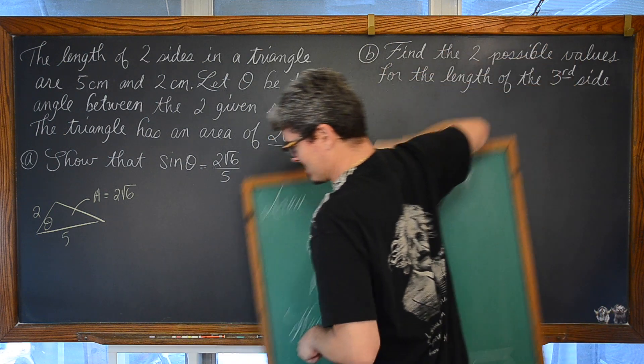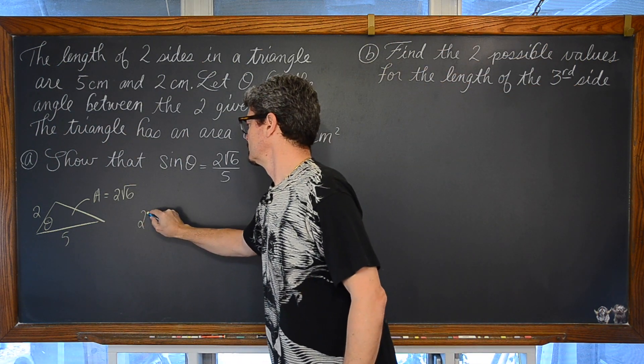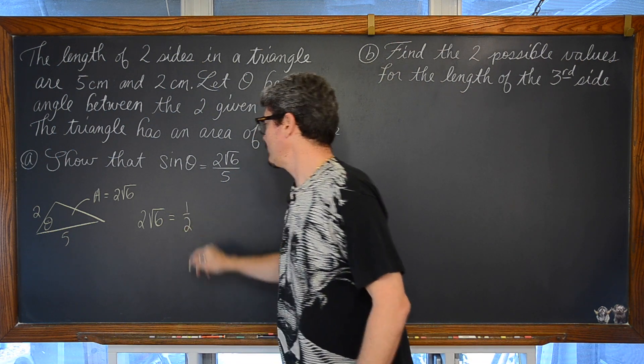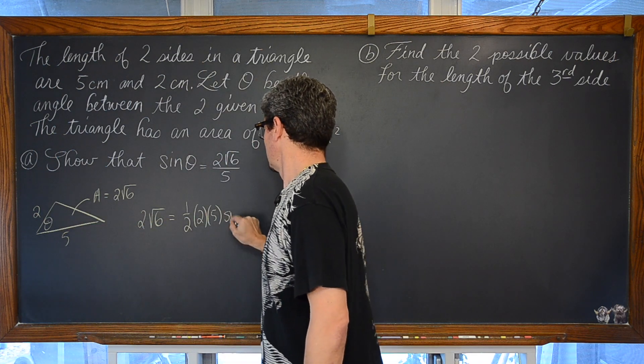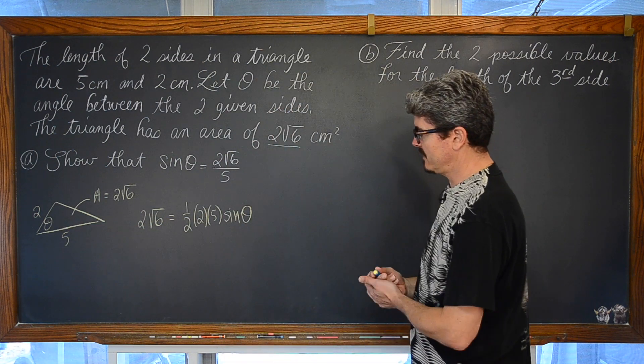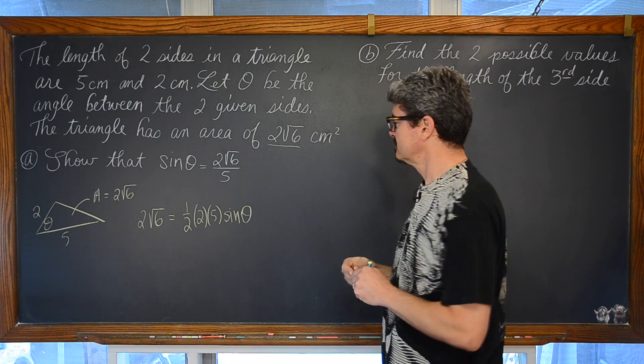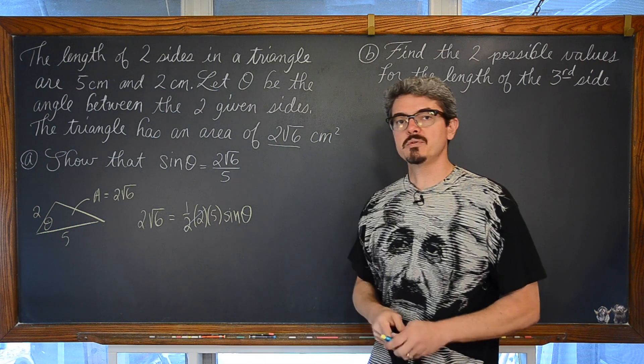Okay. So, we are going to say that 2 square root of 6 is equal to one half of the two sides so 2 and 5 times the sine of theta. It is a non-calculator question and I am trying to make this question my own. So, it works out fairly cleanly. Very cleanly actually. One half of two is equal to one.